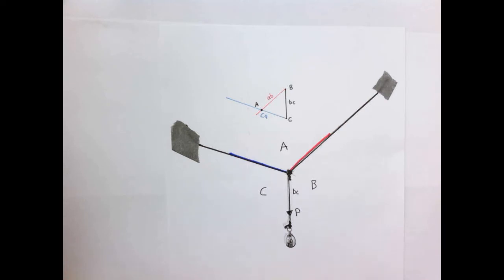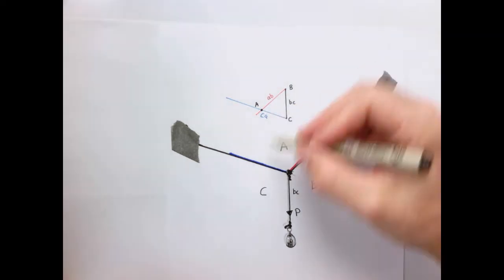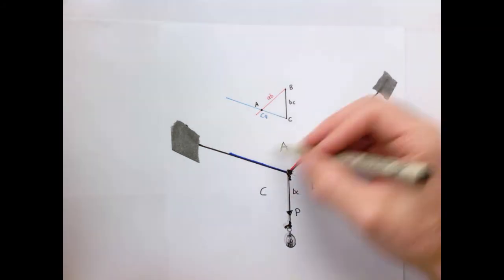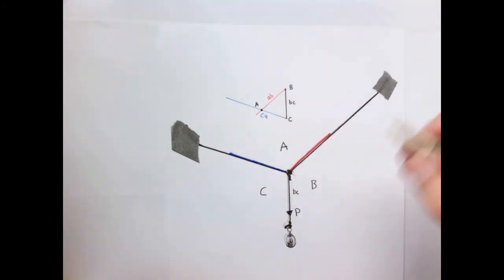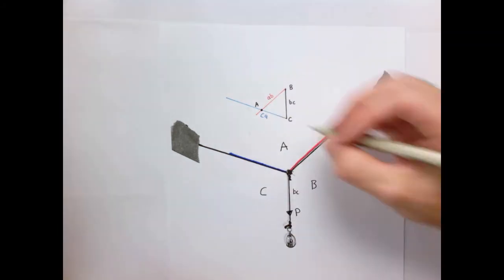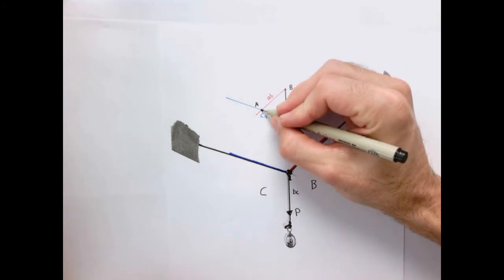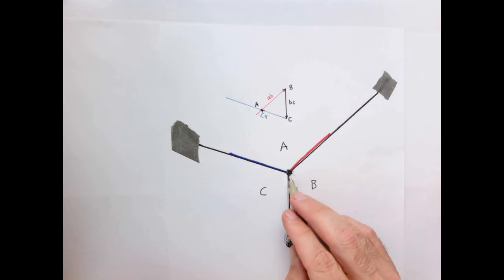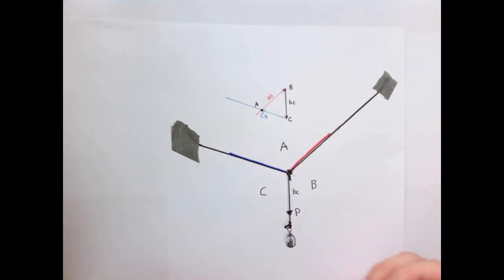So it's easier for us to go from this diagram to this diagram. This is the form, the shape of the structure, and these are the forces. Again, these are vectors. So we're doing the free body diagram — this node has to form a closed triangle. Perfect.